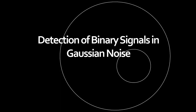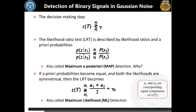We will review binary signals in Gaussian noise, which we already covered. We have seen that we can have two different types of detectors. In the binary case, the problem is relatively simple — it is a binary thresholding problem where the received signal Z(t) sampled at capital T is compared with a specific threshold gamma. If Z(T) is greater than gamma, hypothesis H1 is true, meaning symbol S1 was transmitted, and vice versa.